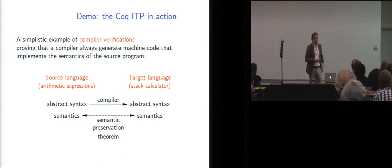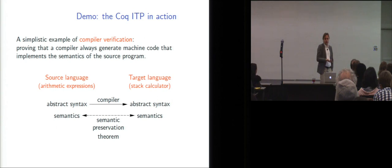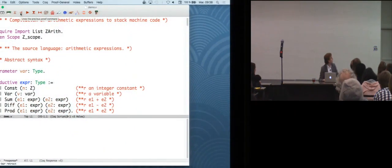OK, so for the demo, I'm going to show you a simple example of compiler verification. So basically, the idea is to prove that a compiler always generates machine code that implements the semantic of the source program, that no miscompilation occurs. And we are going to do that for a very simple source language and a very simple target language. So the source language is just arithmetic expressions. The target language is a stack calculator. For both languages, we are going to give abstract syntax and operational semantics. And we are going to define the compiler as a function, from source abstract syntax to target abstract syntax, and then prove something that relates the semantics of the source and compiled code. All right, so let me switch to my other window. OK, is this big enough? Everyone can read. All right, let's go.